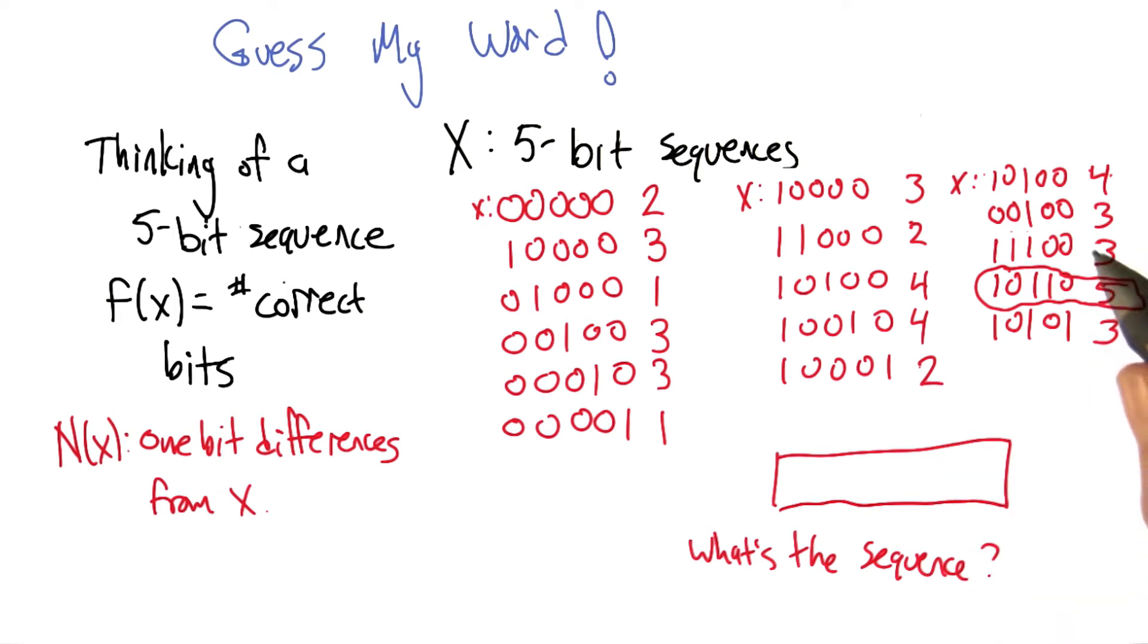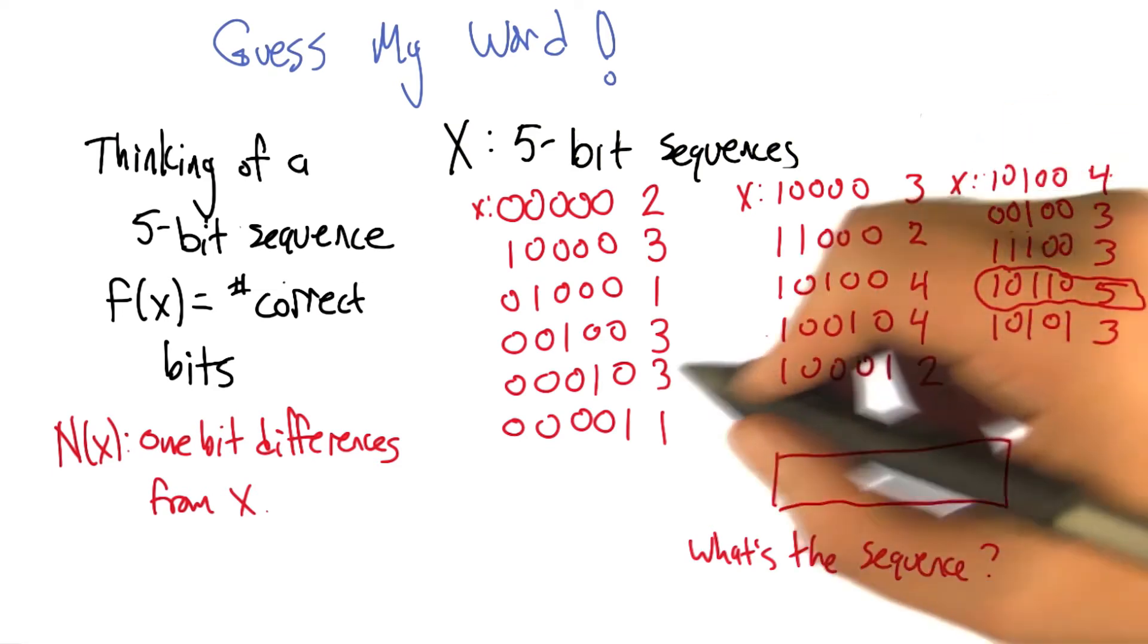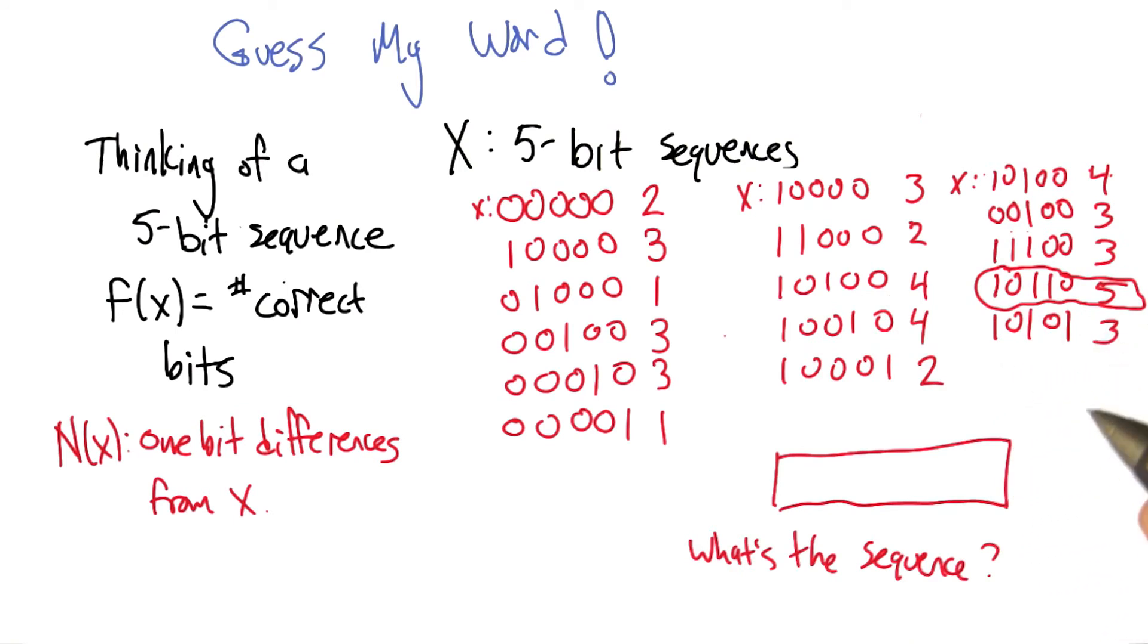So how could we have figured out the sequence without that extra information I just gave you? Well, if we look at the two that have four, we can basically just see that they must have three in common, which they do. The first, the second, and the last one. Okay.